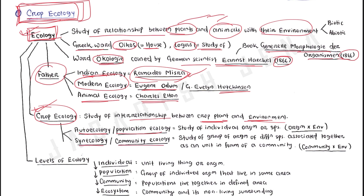Autecology or population ecology is the study of an individual organism or species and the relationship between that organism and its environment. Synecology or community ecology is the study of a group of organisms of different species associated together as a unit, in the form of a community, and their relationship with the environment.